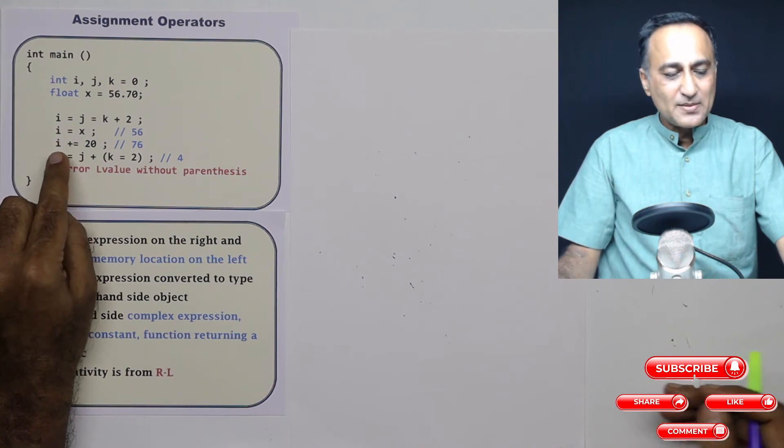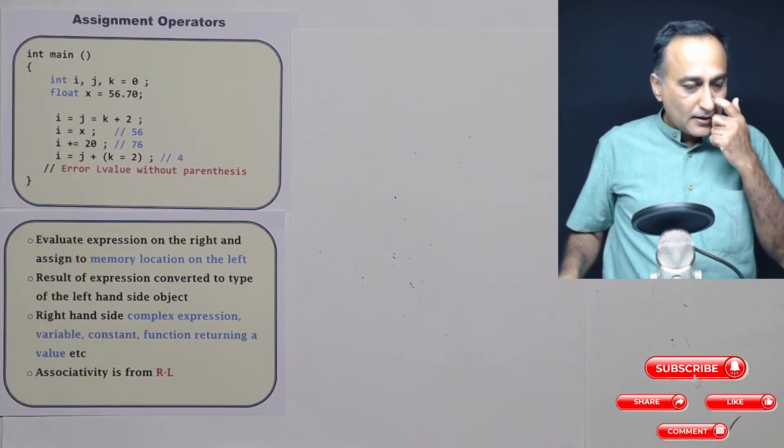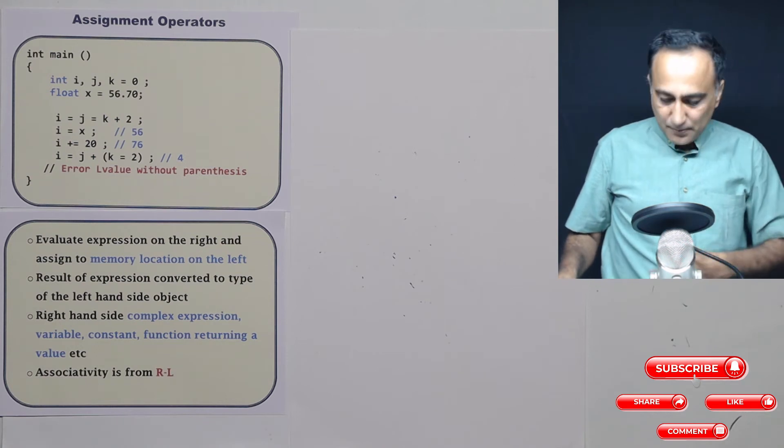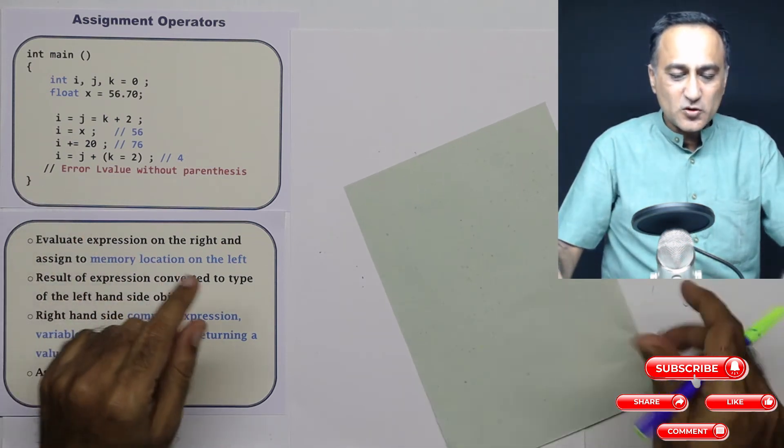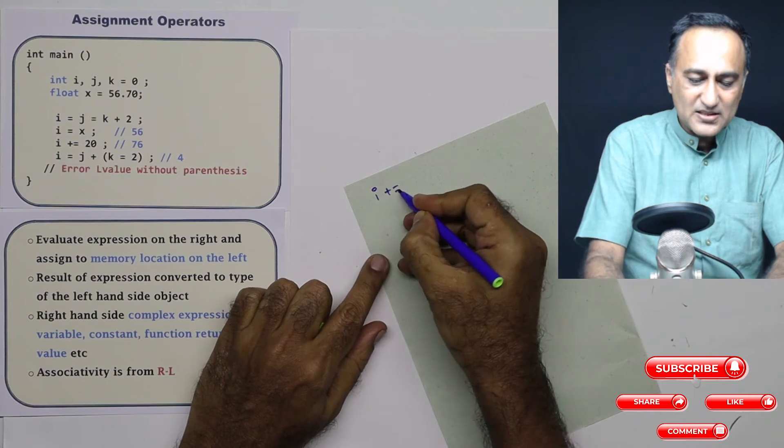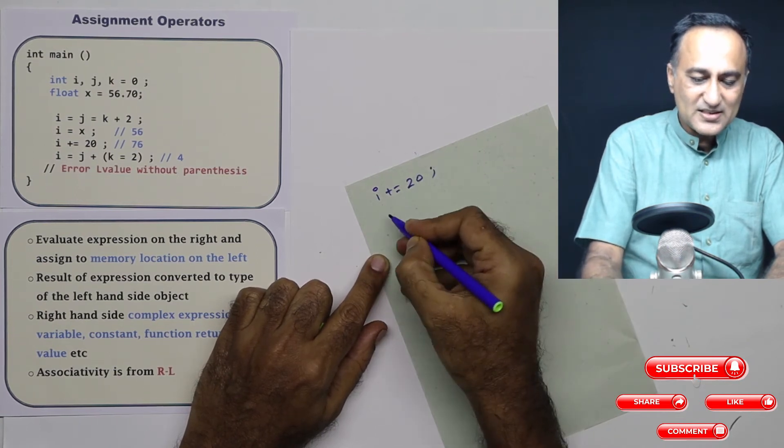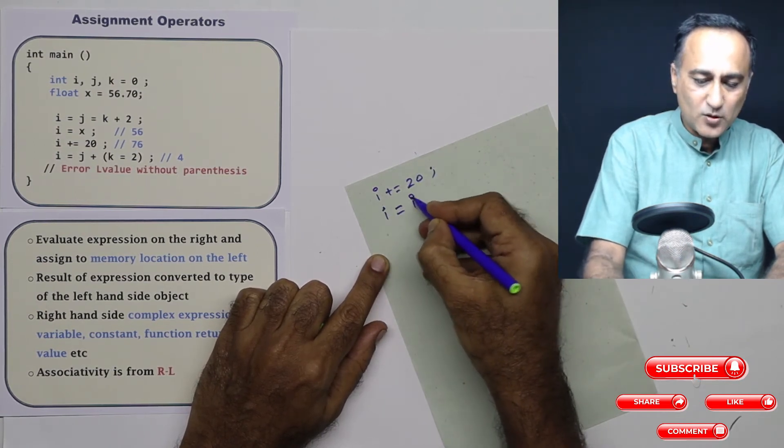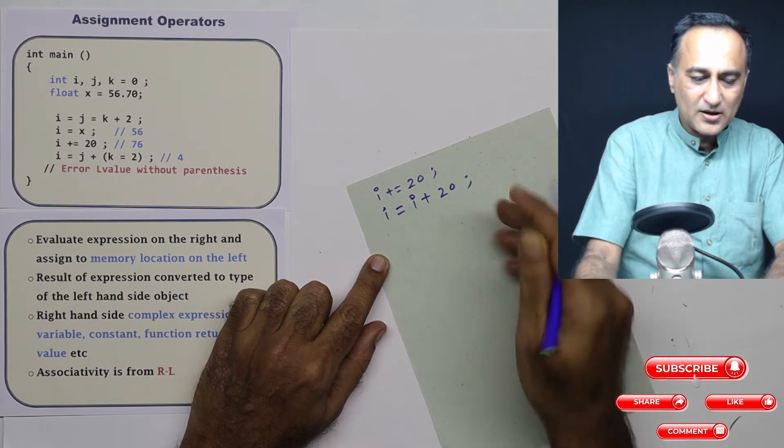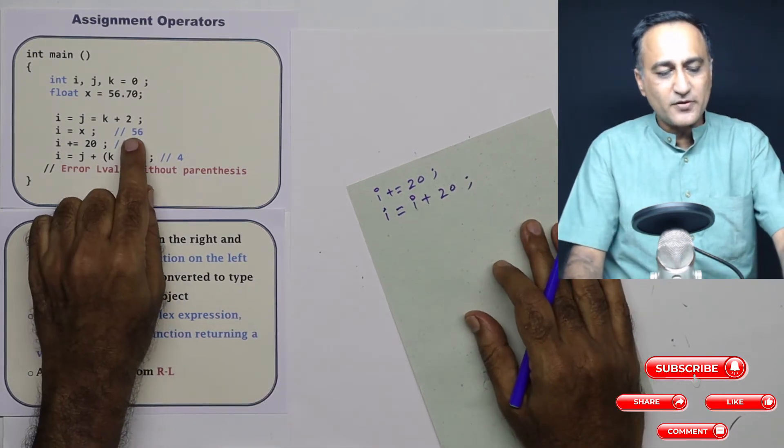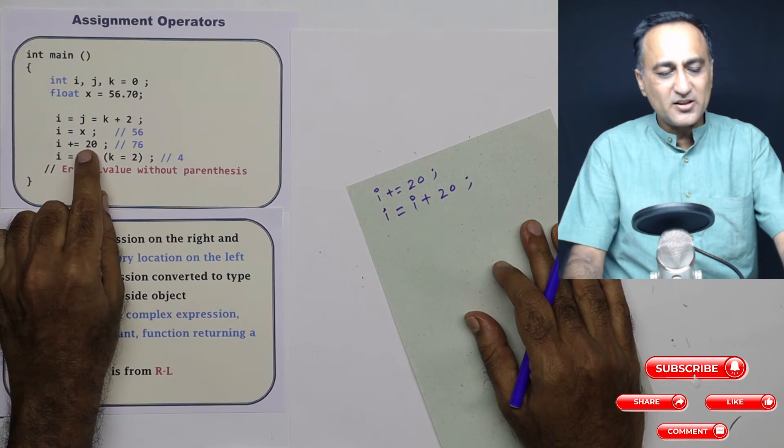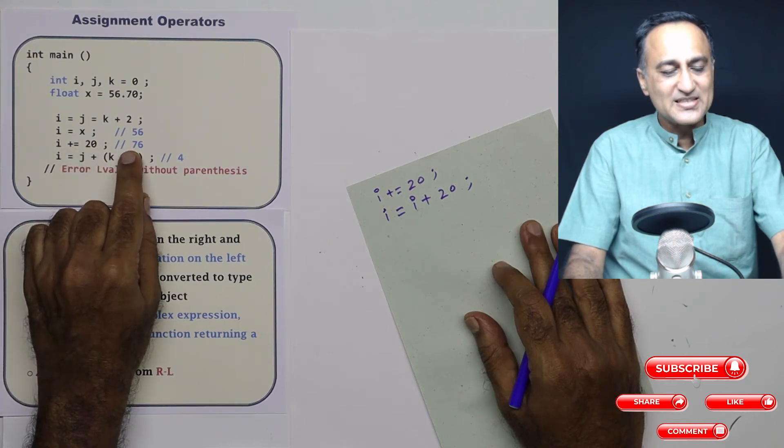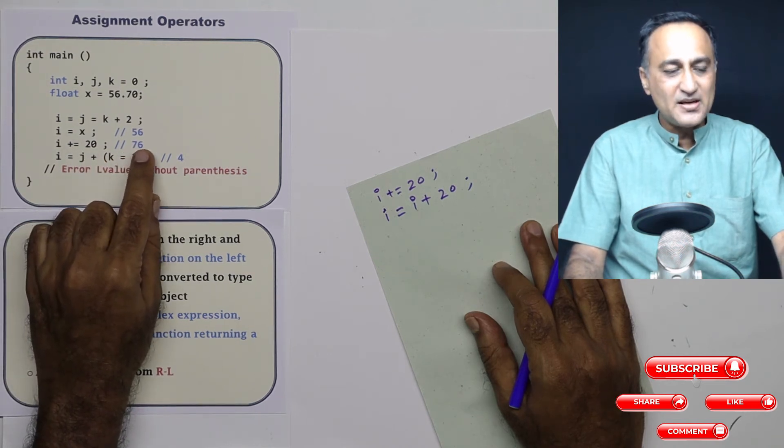Here what I am doing is I am using a shortcut increment or a shortcut plus operator. So when I say i plus equals 20, it is as good as saying i equals i plus 20. So the old value of i was 56, 56 plus 20, the new value of i is 76.